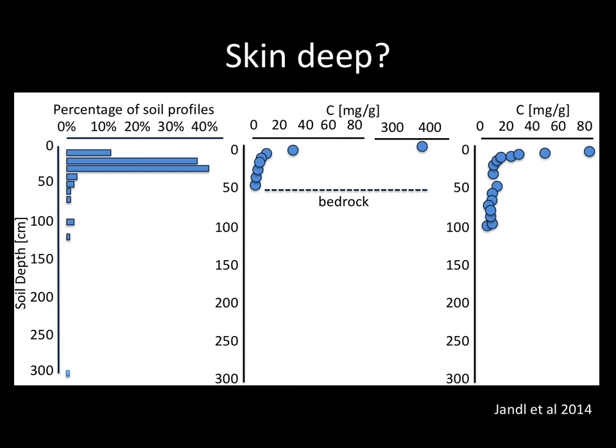The need for critical zone science was brought home to me when I first saw the results in this manuscript, which is a global meta-analysis of soil carbon measurements. As you can see on the left-hand side, in this global analysis over 80 percent of the data points come from the top 30 centimeters of the soil. This is fine in areas where the bedrock is shallow — as shown in the graph in the middle — where those top 30 centimeters do capture most of the carbon store. But when we move to a deeper profile, such as that illustrated on the right, this sampling approach misses most of the carbon.